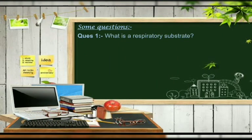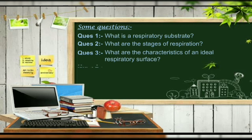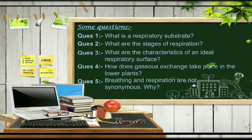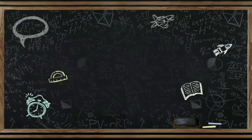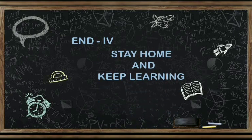Here are some practice questions: Question 1 — What is respiratory substrate? Question 2 — What are the stages of respiration? Question 3 — What are the characteristics of an ideal respiratory surface? Question 4 — How does gaseous exchange take place in lower plants? Question 5 — Are breathing and respiration synonymous? Why? That concludes Part 4. Stay home and keep learning. Thank you.